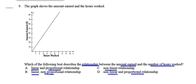Question 9. The graph shows the amount earned and the hours worked. Which of the following best describes the relationship between the amount earned and the number of hours worked? A: the relationship is linear and proportional. B: not linear, non-proportional. C: non-linear relationship. D: non-linear and proportional relationship.